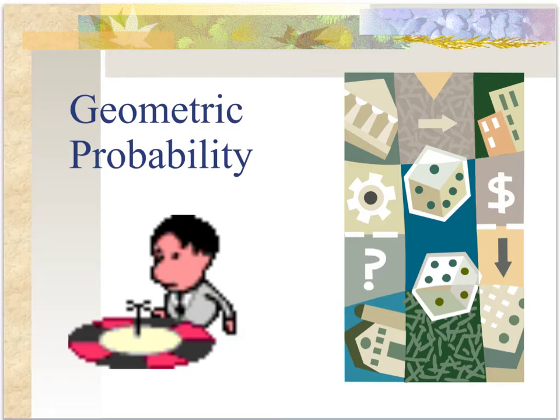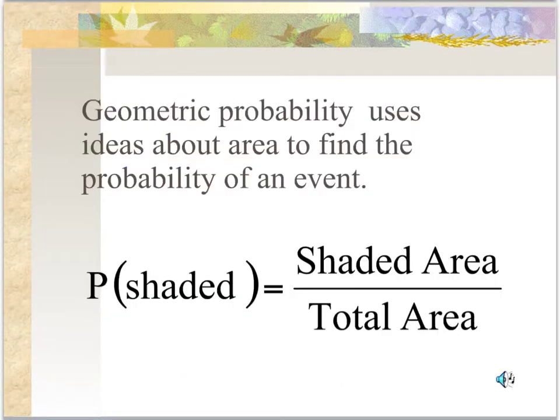In this section, we're going to focus on geometric probability. What we're looking at here is using the idea of geometric area to find the probability. Pretty simply stated, we're basically saying the probability of the shaded area, or landing in the shaded area, is equal to the area of the shaded region divided by the total area that we could fall into.